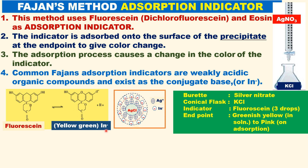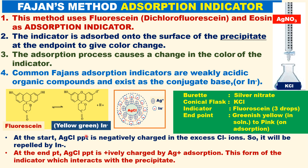At the start, in the beginning, when silver chloride is precipitated — silver chloride in the presence of excess chloride — the silver chloride precipitate is negatively charged before the end point because of excess chloride ions, the unreacted chloride ions. So the indicator anion will be repelled by the AgCl precipitate, which is negatively charged. Therefore, the indicator anion cannot bind to the precipitate because the precipitate is negatively charged.